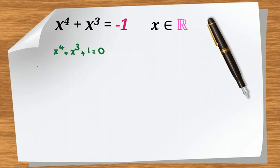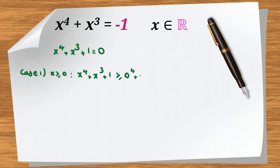Case 1: if x is positive, or at least 0, then x to the 4 plus x cubed plus 1 will be at least 0 to the 4 plus 0 cubed plus 1, which is 1. So in this case we don't have any answer, because we want to reach 0 but the expression is at least 1.